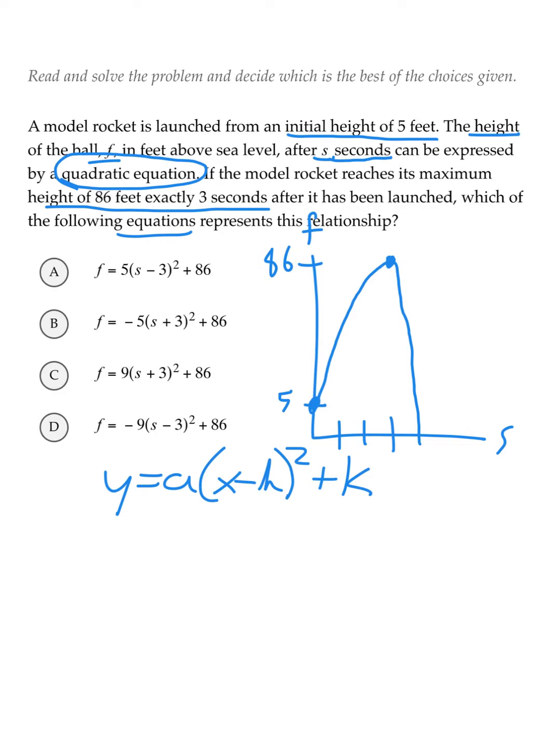This question has told us that the maximum value of the parabola is a height of 86 after 3 seconds, or the coordinate (3, 86). In the standard form equation of a parabola, the vertex can be found by merely taking (h, k).